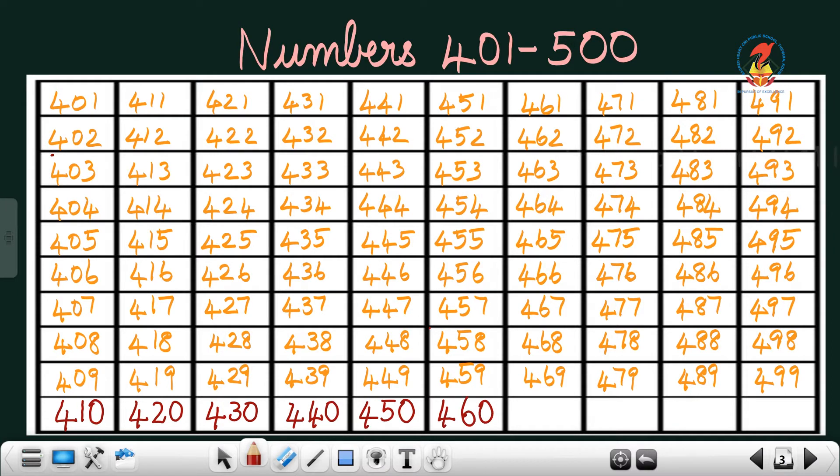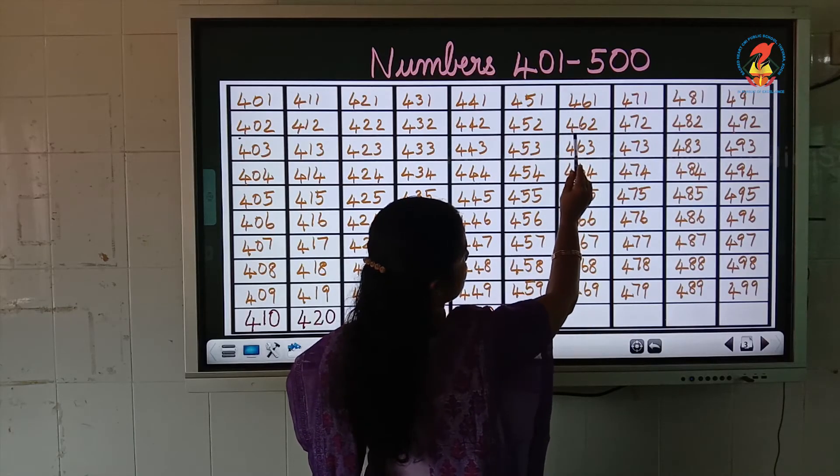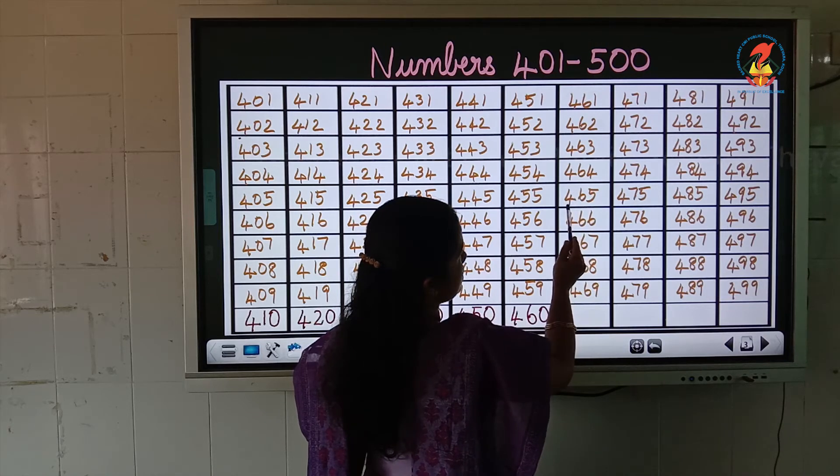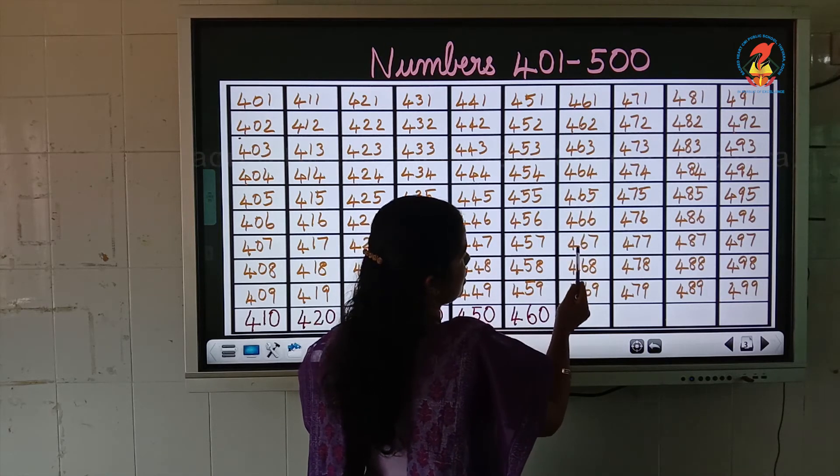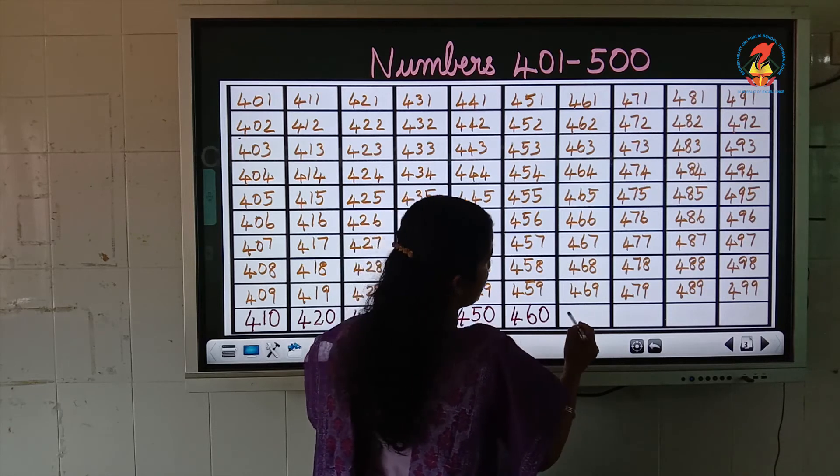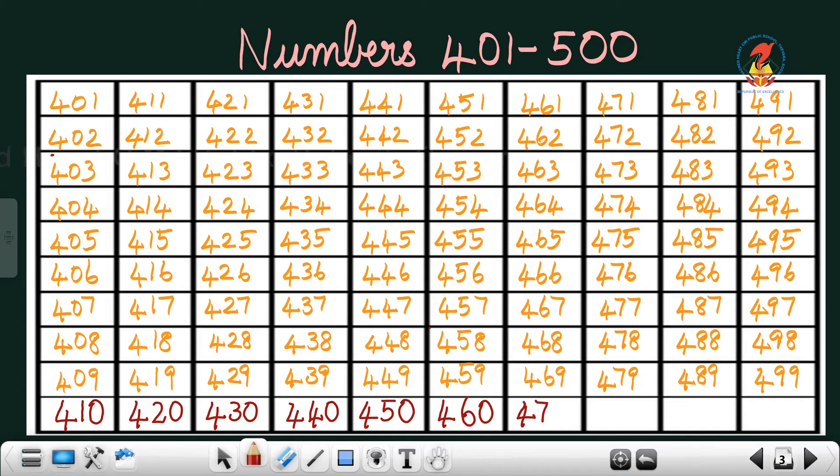After 460, it is 461, 462, 463, 464, 465, 466, 467, 468, 469, 470.